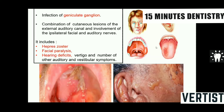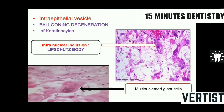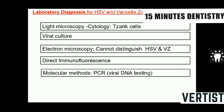Histopathologically, ballooning degeneration of cells is seen in the intraepithelial vesicles, with intranuclear inclusion bodies and multinucleated giant cells. Laboratory diagnosis is based on clinical features, viral culture, and detection of antibodies against these viruses.